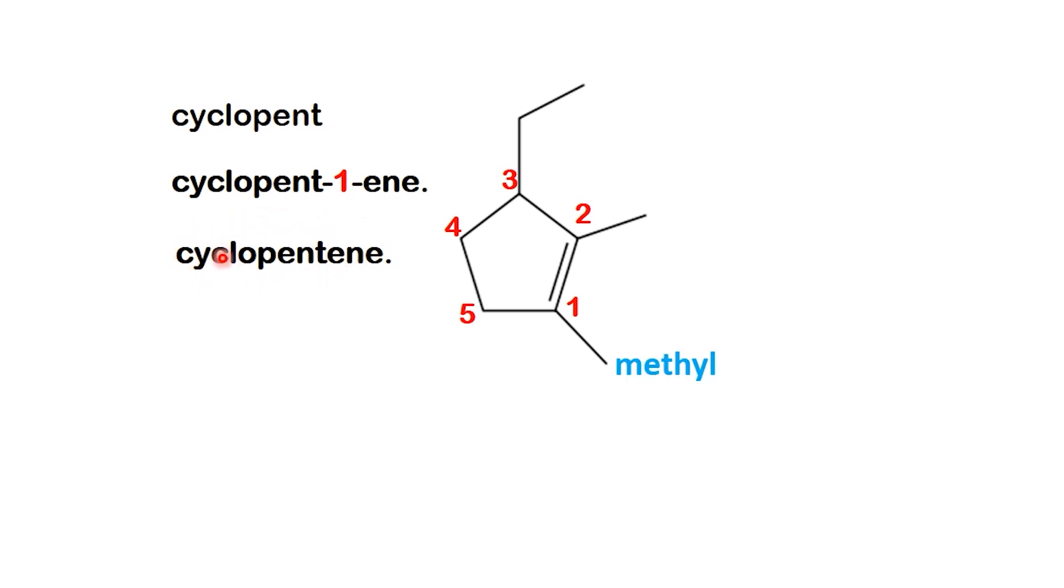Next, we identify the substituents. On carbon 1, there's a methyl group. On carbon 2, another methyl group. And on carbon 3, we find an ethyl group.